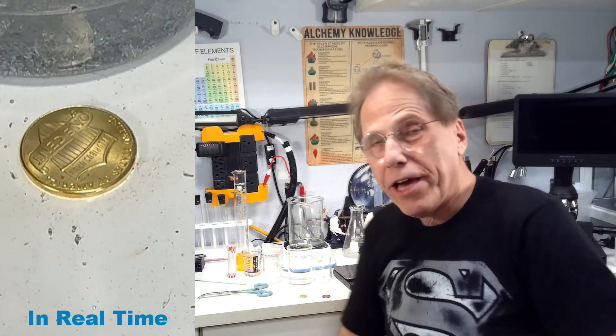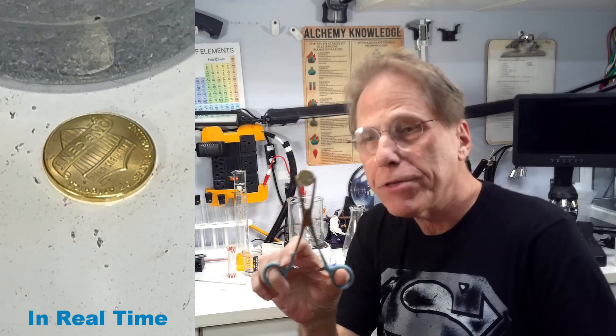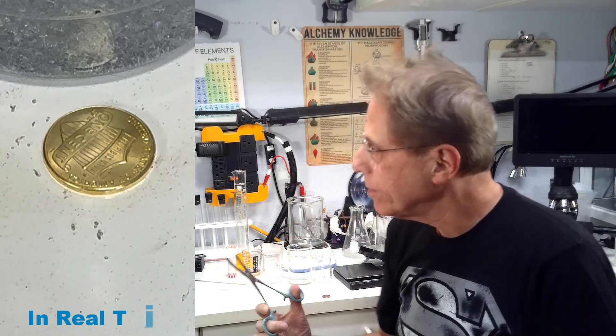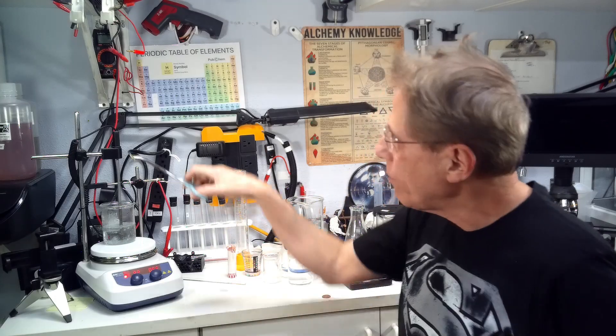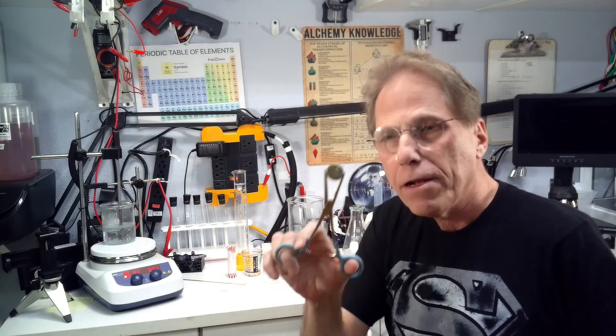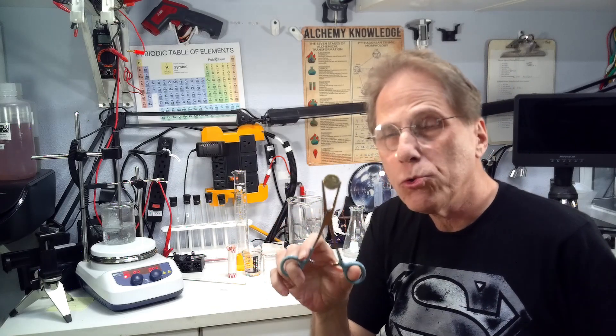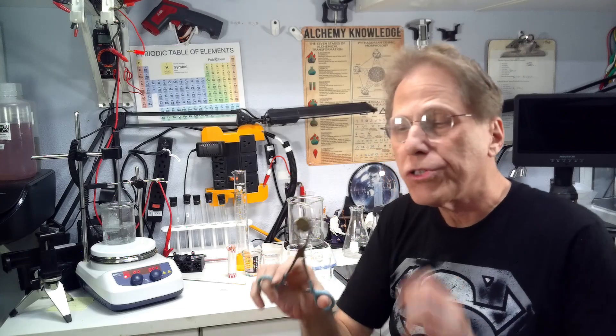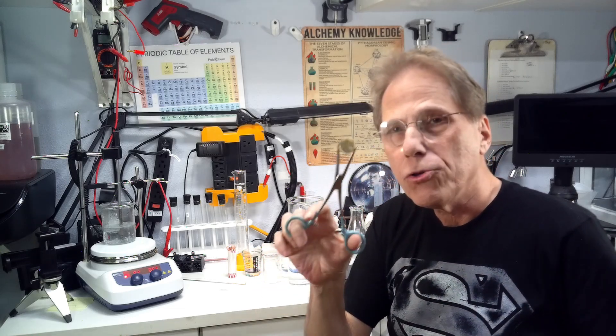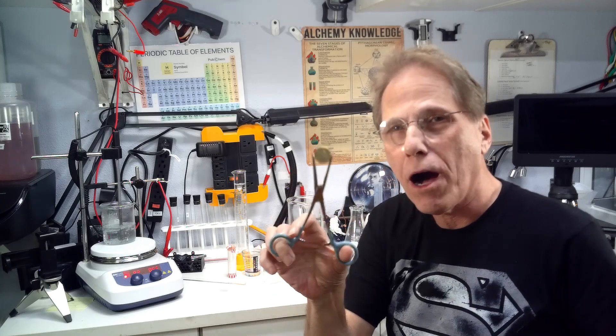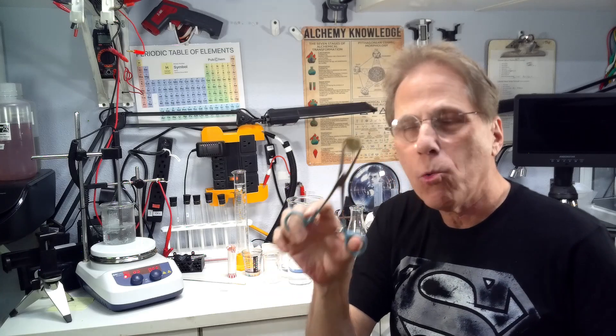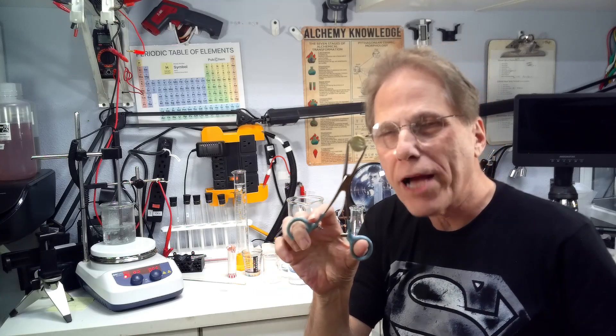So, what happened here? Do we really have gold on here? What we have on here is brass. We made brass. What we did was when we coated it with the zinc and then we applied heat from the heated stirrer, the zinc and the copper fused together and when you fuse zinc and copper together, you get brass. This is actual brass coating on this coin. Now, it's not zinc anymore. We turned the copper penny into brass.